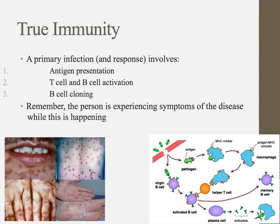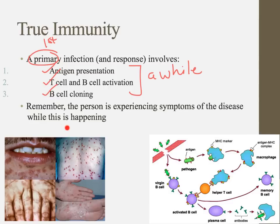To review the primary immune response — your first exposure to something — we covered antigen presentation by macrophages, T-cell and B-cell activation, and B-cell cloning. This process can take a week or more, and while it's going on, the person will be experiencing symptoms.